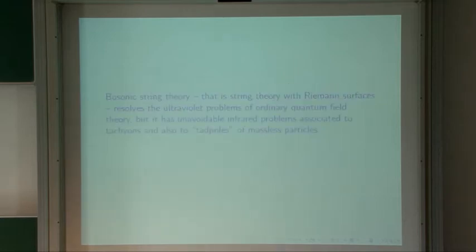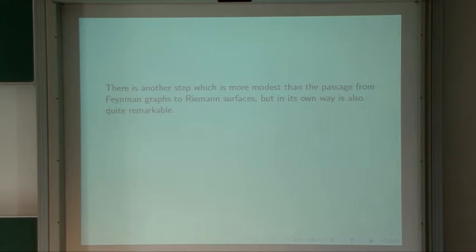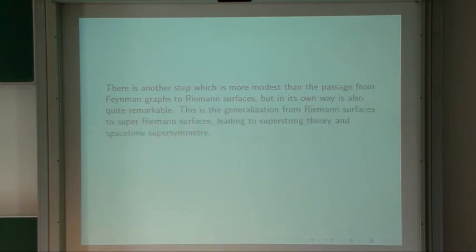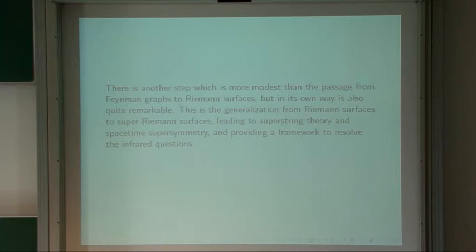There's another step which is also quite dramatic, though more modest than the passage from Feynman graphs to Riemann surfaces. The second step is the generalization from Riemann surfaces to super-Riemann surfaces, which leads to superstring theory and space-time supersymmetry. It provides a framework to resolve the infrared problems without changing the fact that going to bosonic string theory has already eliminated the ultraviolet problems.